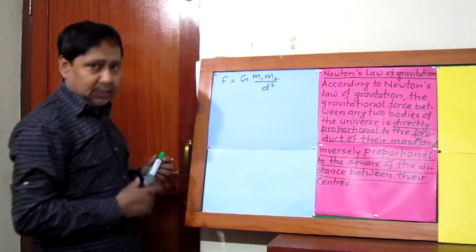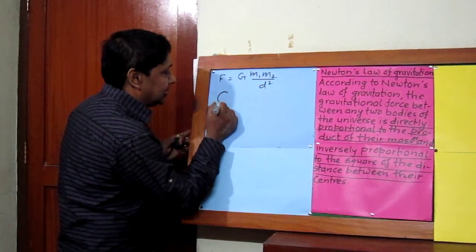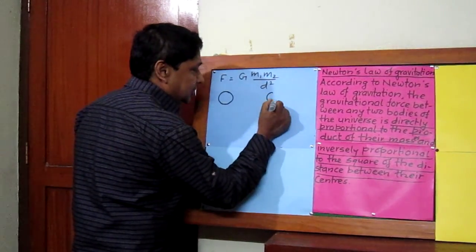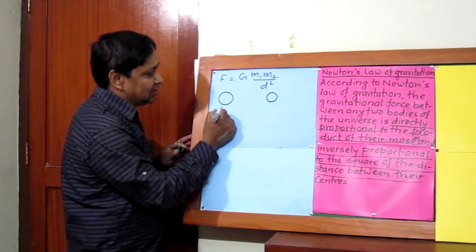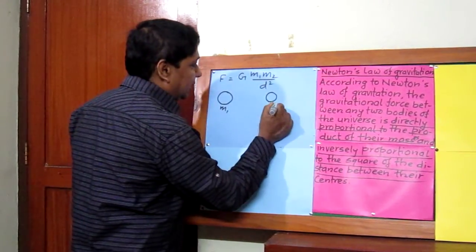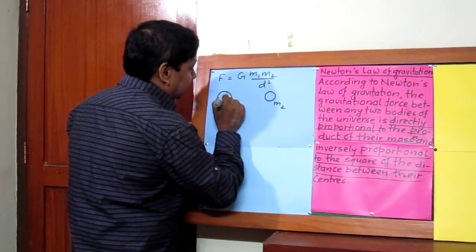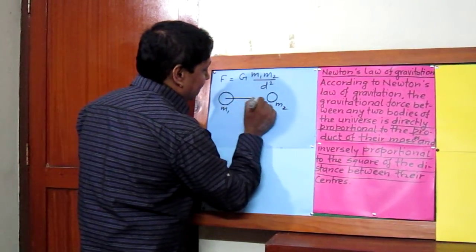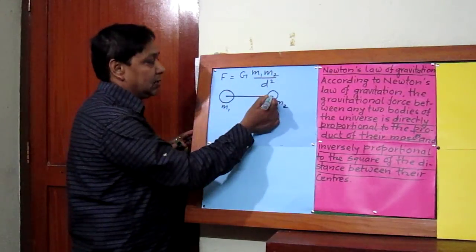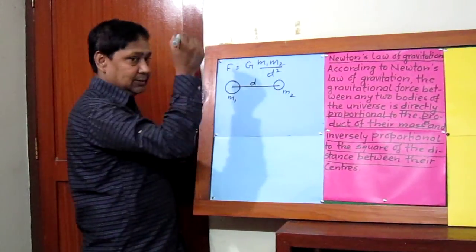How do we derive this equation? Let's say this is a body, this is another one, and the mass of this first body is m1, and the mass of the second body is m2. Let's take the distance between them — we always measure distance from center to center. Distance between them is d.